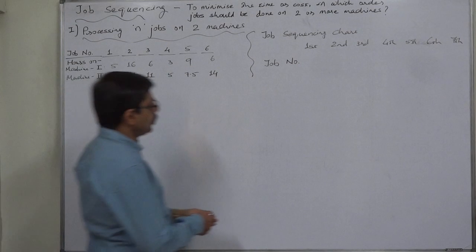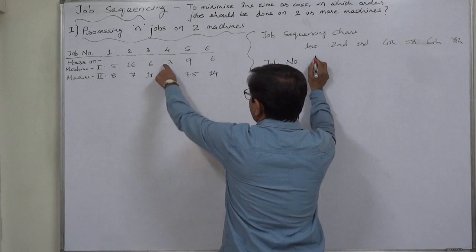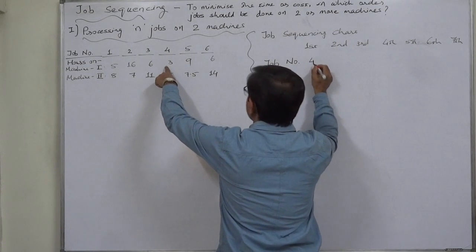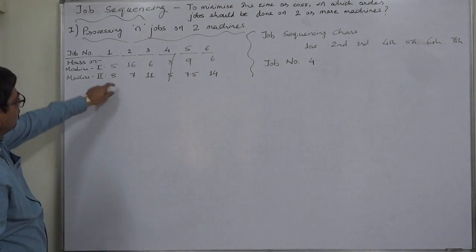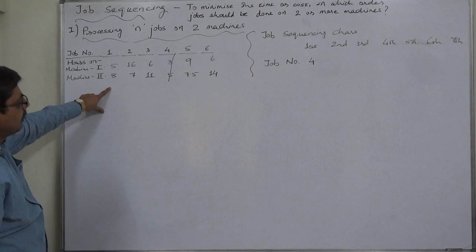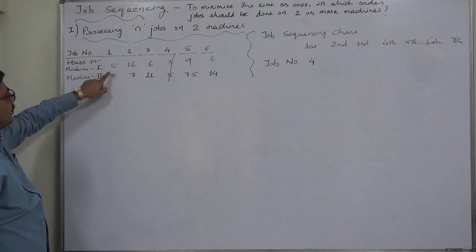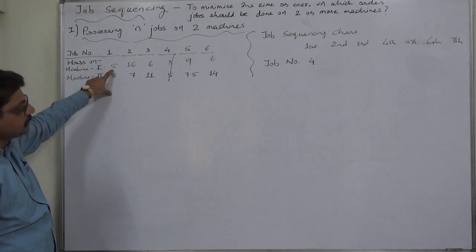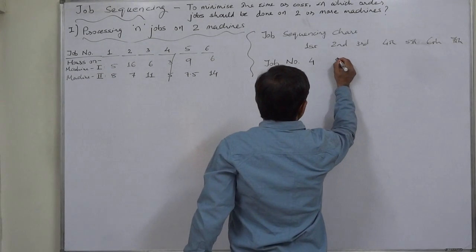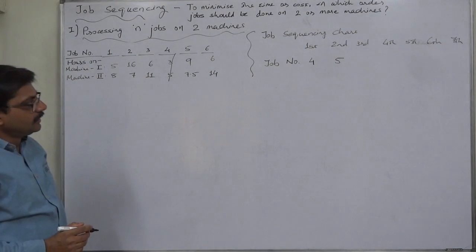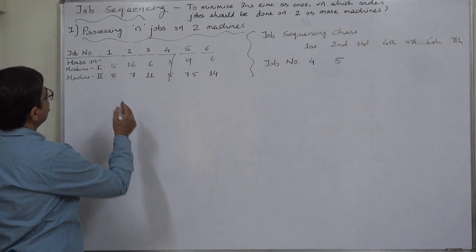So we need to place this job on the left hand side of this job sequencing chart. Our first choice is job number four. Now, for the remaining five jobs — one, two, three, four and six — find out the minimum time. It is on machine one, again five hours on machine one. So we need to place this job on the left hand side of the remaining chart. Job number one.